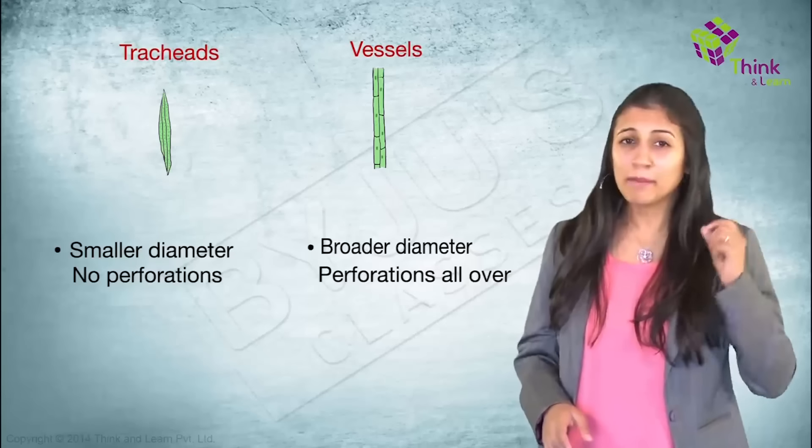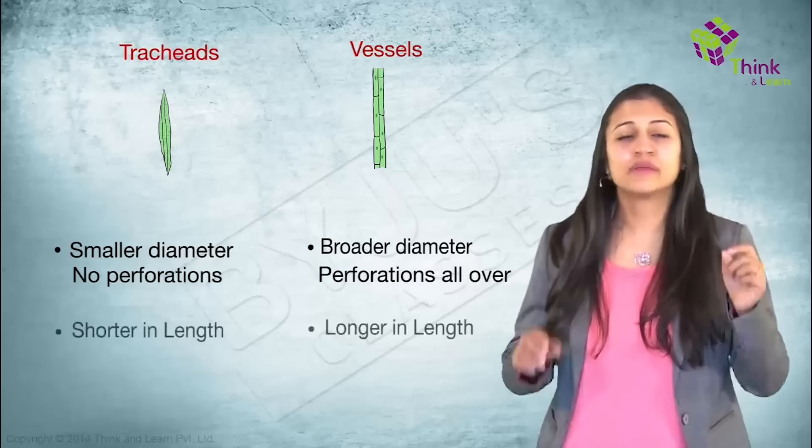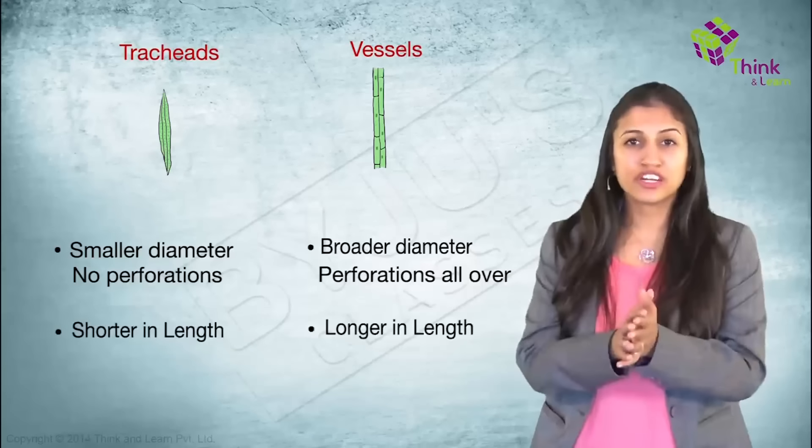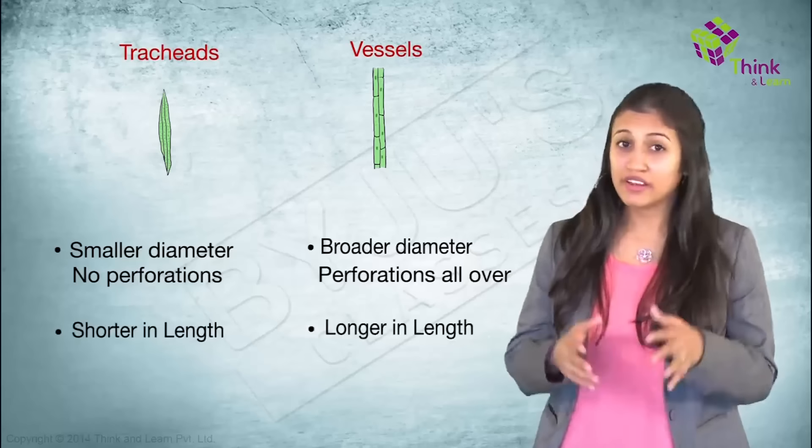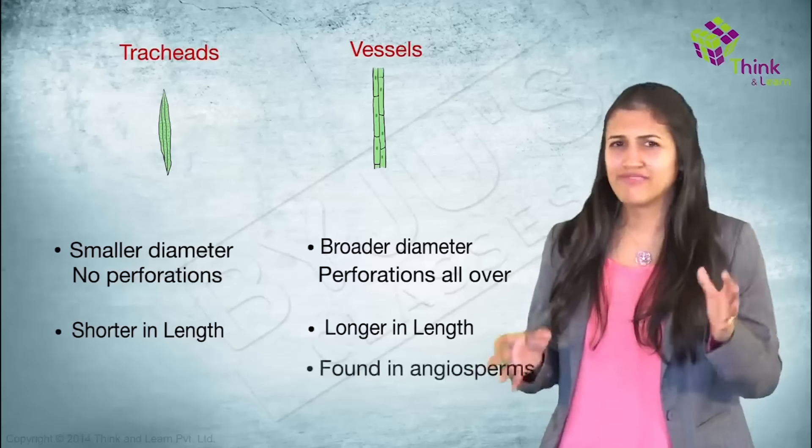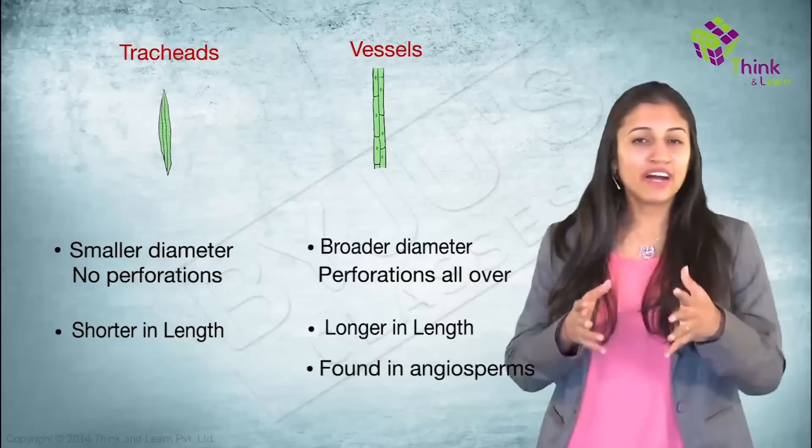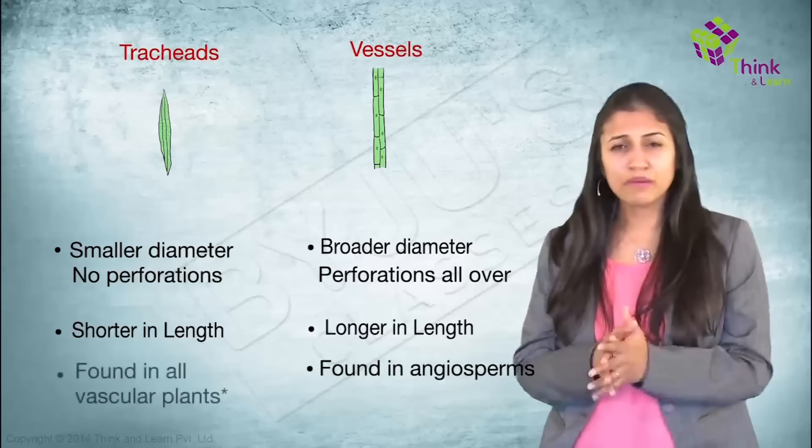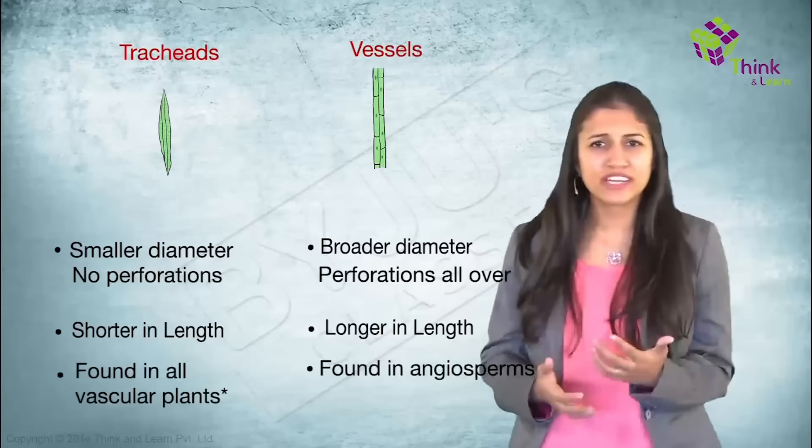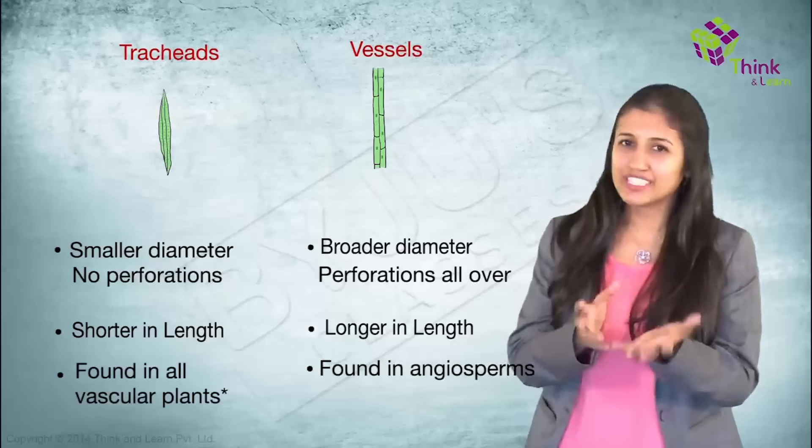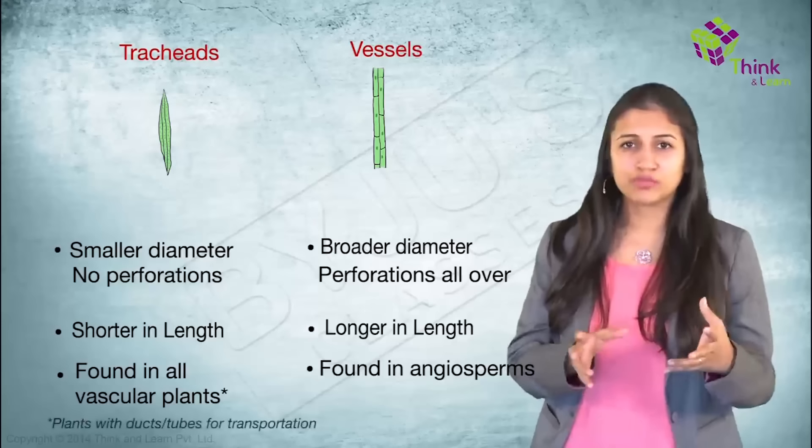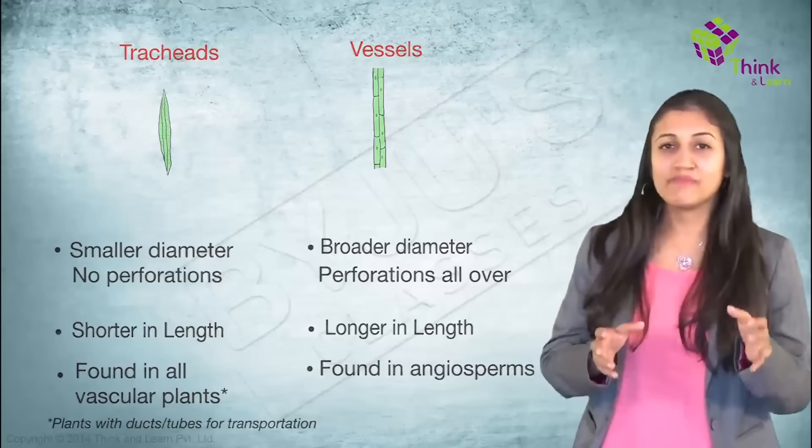Two, vessels are much, much longer in length and are the main components for water conduction in the plant and vessels are found only in angiosperms. What's that? Flowering plants. But tracheids are found in all vascular plants. Now, what's vascular plants? I'm going on saying that, right? Nothing but those who have vasculums or ducts or tubes for transportation. That would be the xylem and phloem.